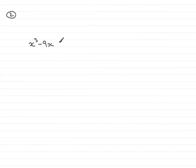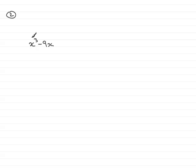In number two, we're asked to factorize this expression completely. When it says completely, that seems to be a clue that this particular expression is going to have more to it than just one line. Well, when you've got to factorize anything, make sure that you check, first of all, that there is a common factor.